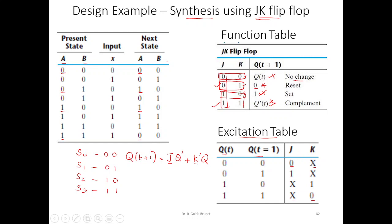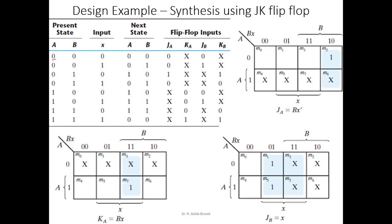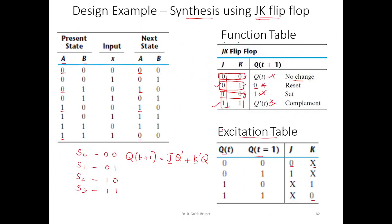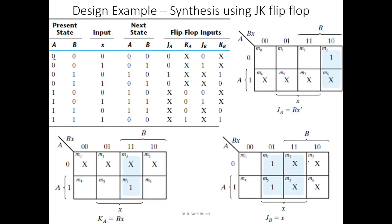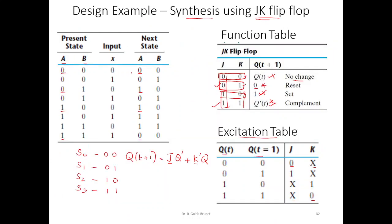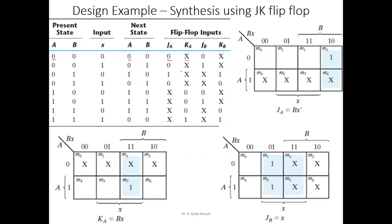This is the excitation table: given the present state and next state, it tells us what inputs to supply to the flip-flop. Using this, we can now compute the flip-flop inputs for flip-flops A and B. For example, when present state A = 0 and next state = 0, we supply JA = 0, KA = X (don't care). When present state = 0 and next state = 1, we supply JA = 1, KA = X. We similarly compute inputs for all combinations for both flip-flop A and flip-flop B.